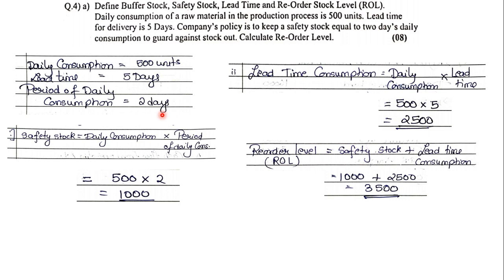The total comes to 3,500 units. This is how you solve a problem sum based on Reorder Level — they give you those three values, you apply the formulas and get the final answer. I hope everyone has understood this first sum. Take a moment to note it down and then we will jump to the second sum based on Reorder Level.